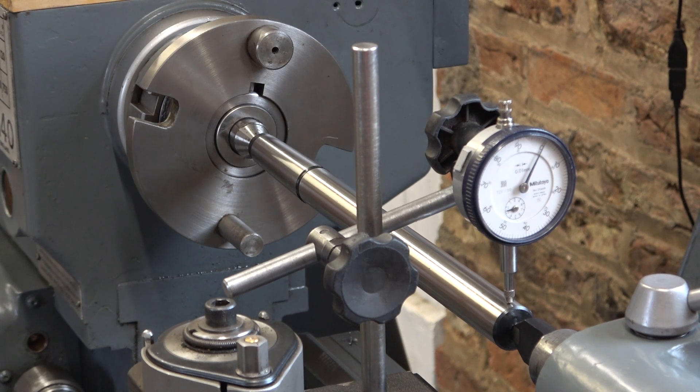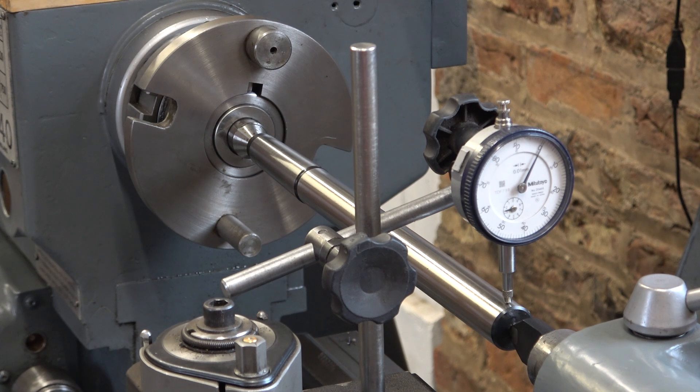A couple of people suggested that I clock off the top of the test bar and that might tell me something about bed wear relative to the centre heights or it might tell me something about the relative centre heights between the headstock and the tailstock. Let's see what happens.